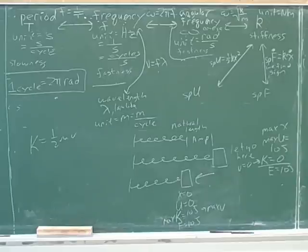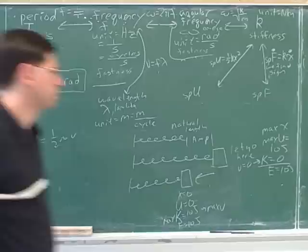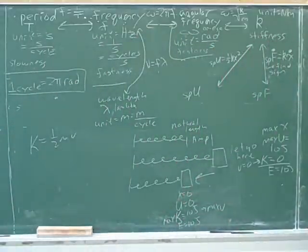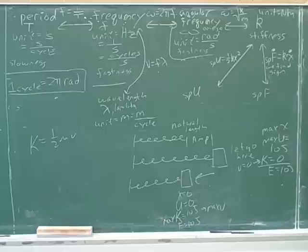When the velocity is zero, so when the object is farthest from its natural length, which would be the maximum expansion and the maximum compression.